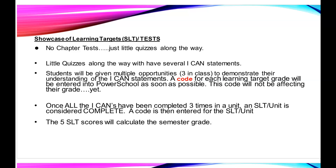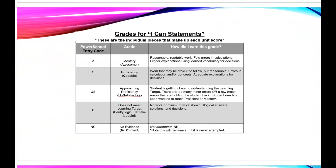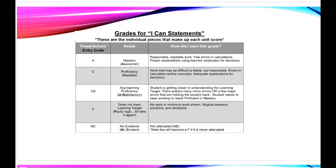Once all the 'I cans' have been completed three times in a particular unit or chapter, that unit is considered complete, and then we're going to put a final code in for that showcase of learning target. You're going to start to see scores pop up into your student's grade. In the end, we're going to have five showcase of learning targets — five chapters — that will be calculated for the semester grade.